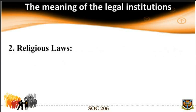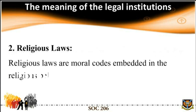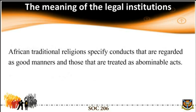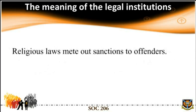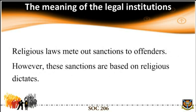Religious laws are moral codes embedded in the religious beliefs of a people. African traditional religions specify conduct that is regarded as good manners and those treated as abominable acts. The line between good and abominable conduct is often spelled out through a number of do's and don'ts in the society, or through what can be referred to as taboos. Religious laws mete out sanctions to offenders; however, these sanctions are based on religious dictates.